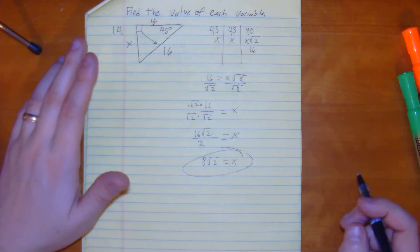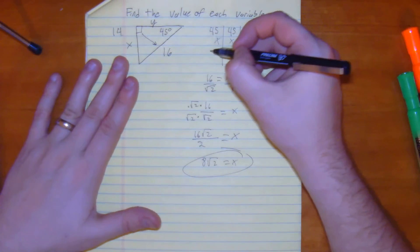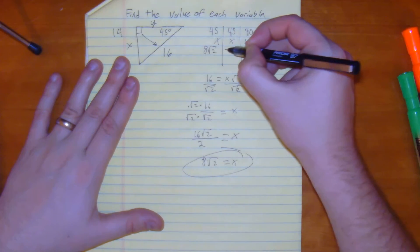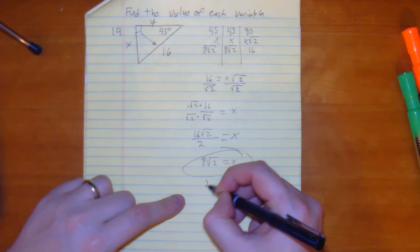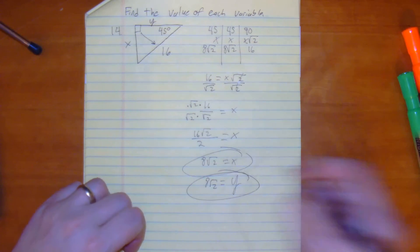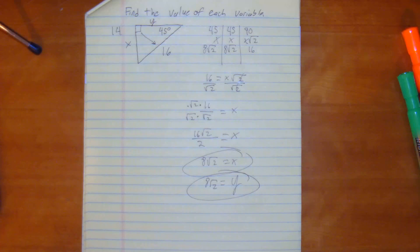So what we have here to finish it off would be 8 square root of 2. So x equals 8 square root of 2, and then y would equal 8 square root of 2. That's how you would do number 14.